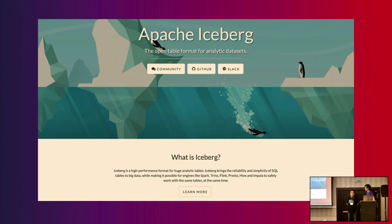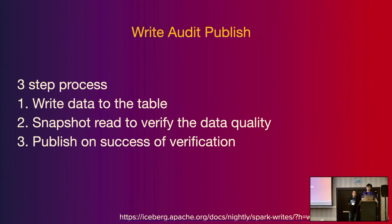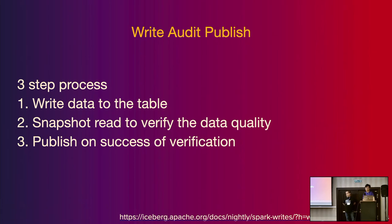Those metrics can also be helpful when checking data quality. Iceberg provides a data quality pattern called Write-Audit-Publish, or WAP. It's a three-step process: first we write the data and generate metadata and new snapshots; then we audit; lastly we publish the snapshot once we verify the data quality checks pass. The key idea is separating when data is written from when it becomes visible to everyone. WAP inserts a second step in between so we only publish data once we have enough confidence.